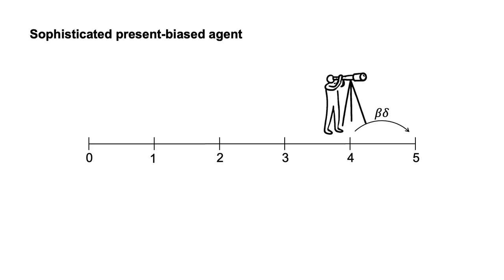They then consider one period earlier and solve for the preferred action, accounting for the previous decision. This means that if they calculate that they will cave into temptation at a certain time, they will remove the option to resist from their choice set.